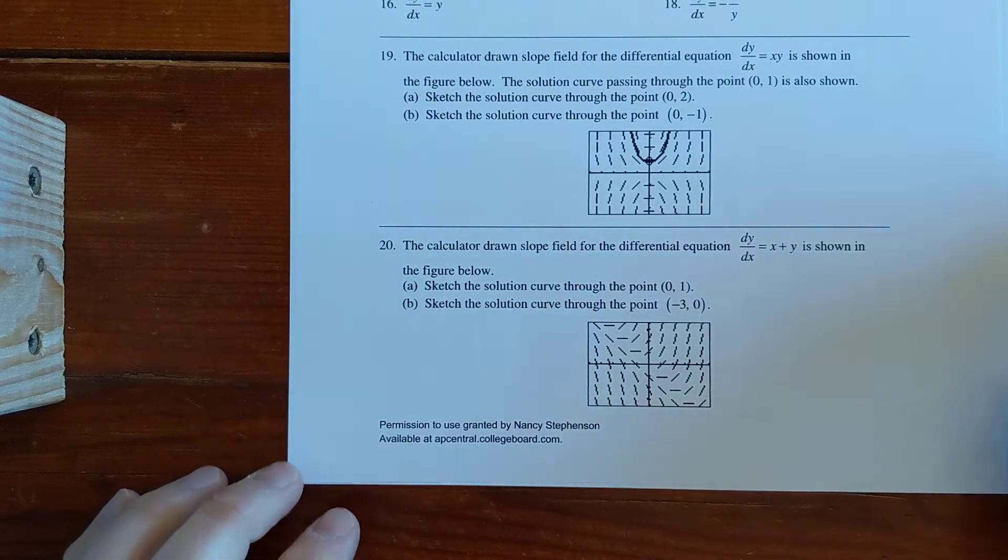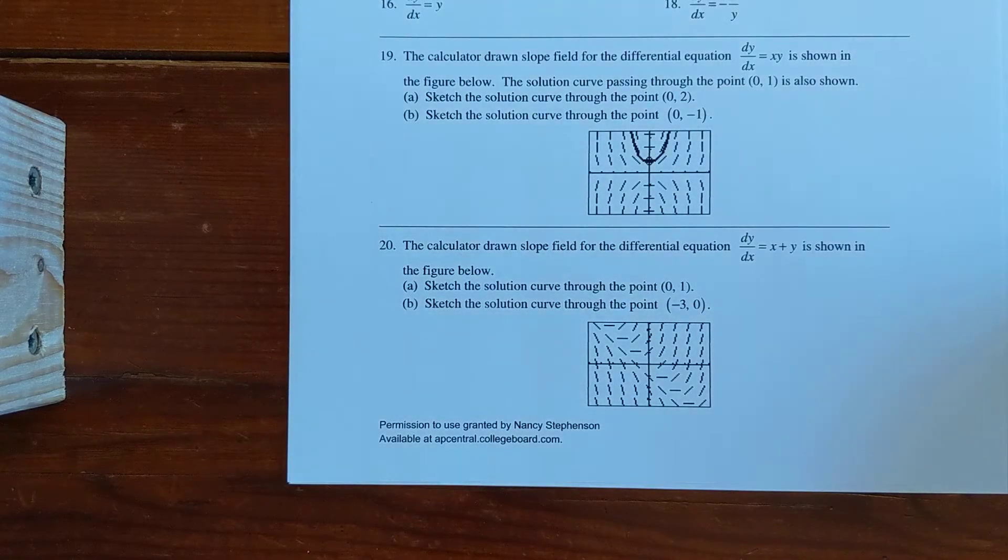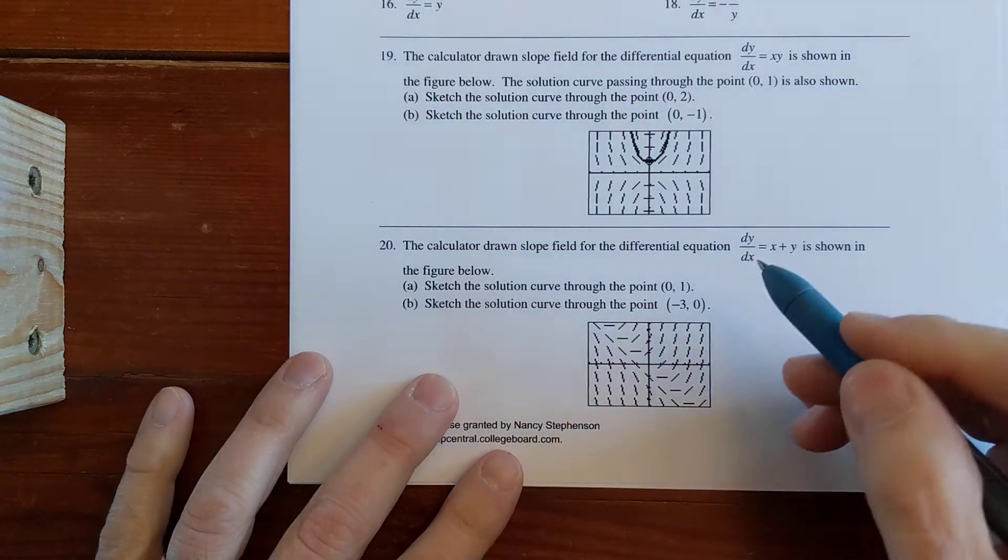Okay, question was asked on the 9.3 slope field packet about number 19 and number 20, so let's go through this one.